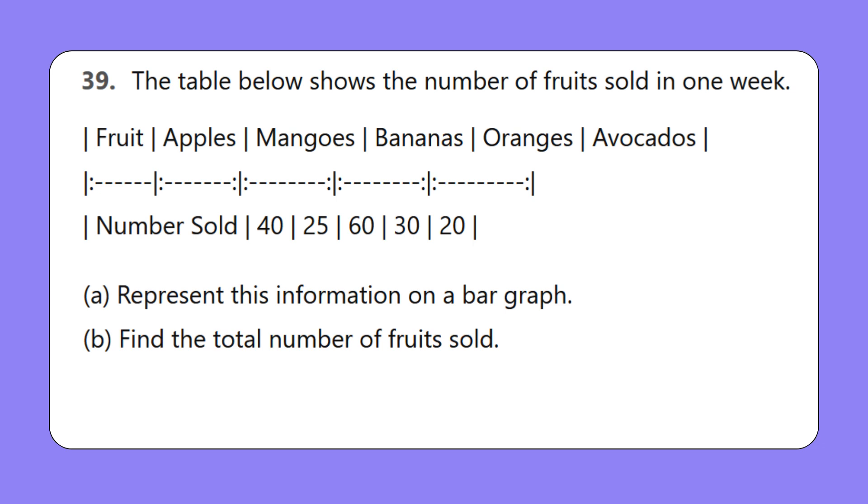39. The table below shows the number of fruits sold in one week. Fruit: apples, mangoes, bananas, oranges, avocados. Numbers: 40, 25, 60, 30, 20. Represent this information on a bar graph. Find the total number of fruits sold.